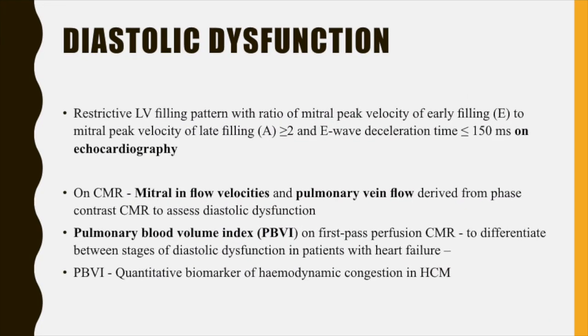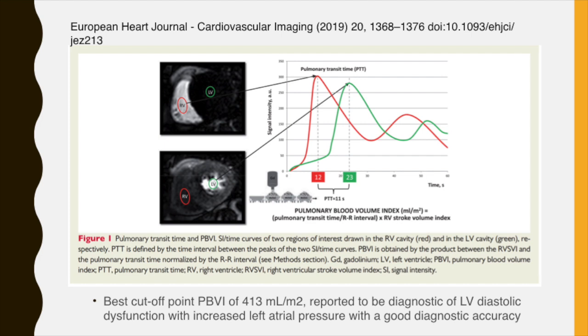Patients with HCM also develop diastolic dysfunction, which is usually defined on echocardiography. Diastolic dysfunction can also be assessed on CMR with various parameters. The simplest would be to look at the mitral inflow velocities and pulmonary vein flow which can be derived from phase contrast CMR. We can also calculate the pulmonary blood volume index on first pass perfusion CMR, which can differentiate between stages of diastolic dysfunction in patients with heart failure. Pulmonary blood volume index is also considered as a quantitative biomarker of hemodynamic congestion in HCM. Here is a method to evaluate the pulmonary transit time and pulmonary blood volume index on the first pass perfusion CMR.